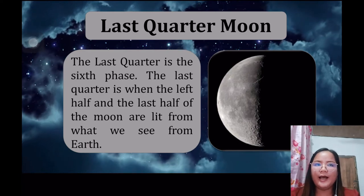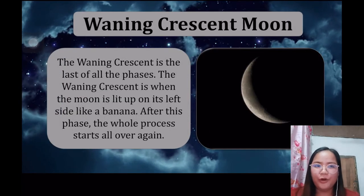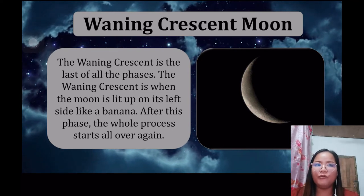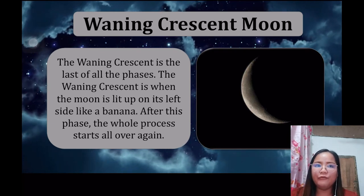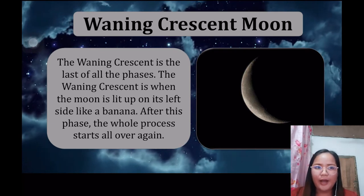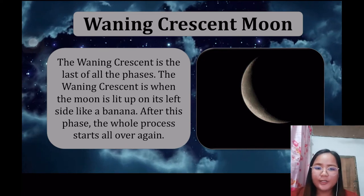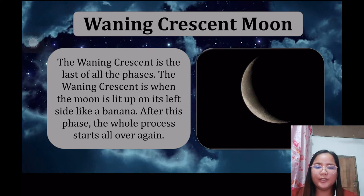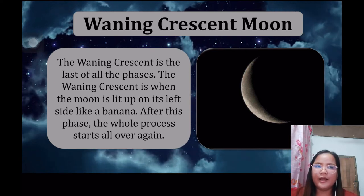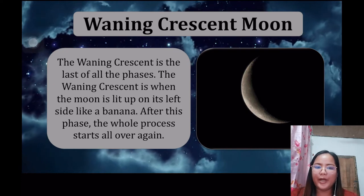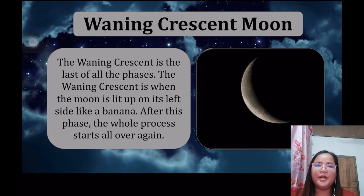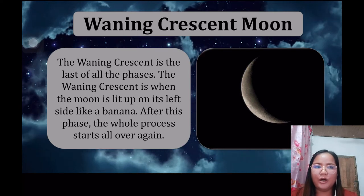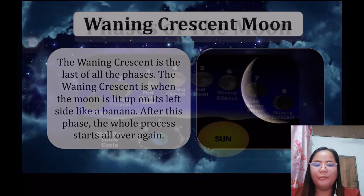The last phase is the waning crescent moon. The waning crescent is when the moon is lit up on its left side like a banana. After this phase, the whole process starts all over again. As you can see in the picture, it's like the side of a banana — only the left side is lit up and the rest of the moon is dark.